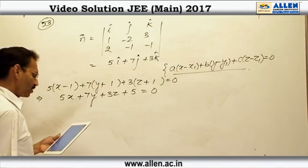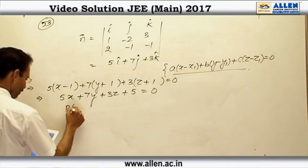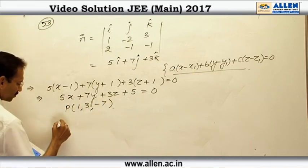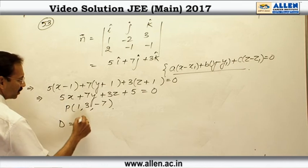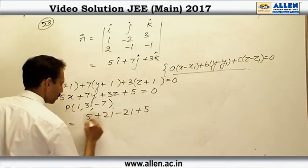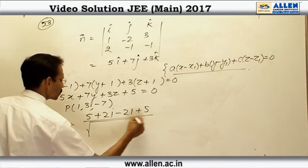Now, the point from which we have to find the distance is (1, 3, -7). So, let us find the distance D. It is (5 + 21 - 21 + 5) over square root of (5² + 7² + 9).